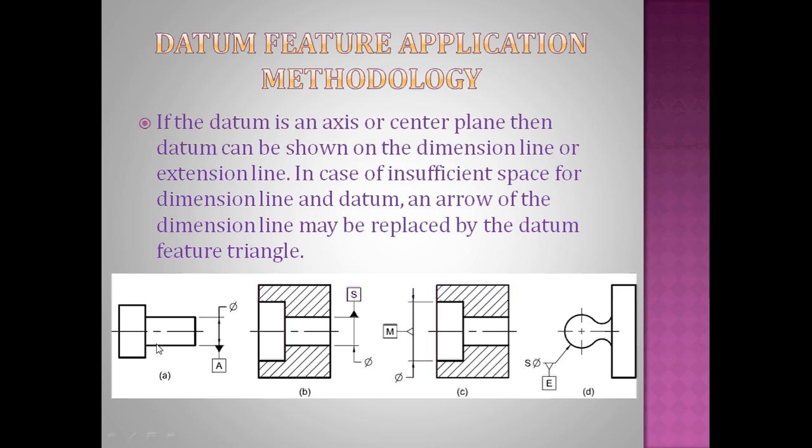So if it is an axis, the representation would be like this. The dimension which indicates the diameter, for that particular dimension the datum feature symbol would be attached. If space is not available for the arrow, one arrow we can delete as per our requirement.